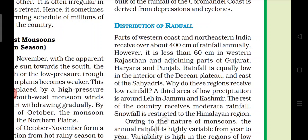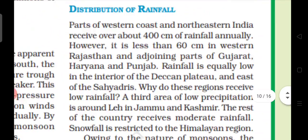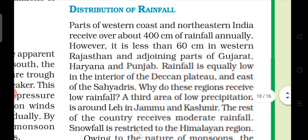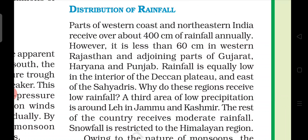Parts of western coast and northeastern India receive about 400 cm of rainfall annually.